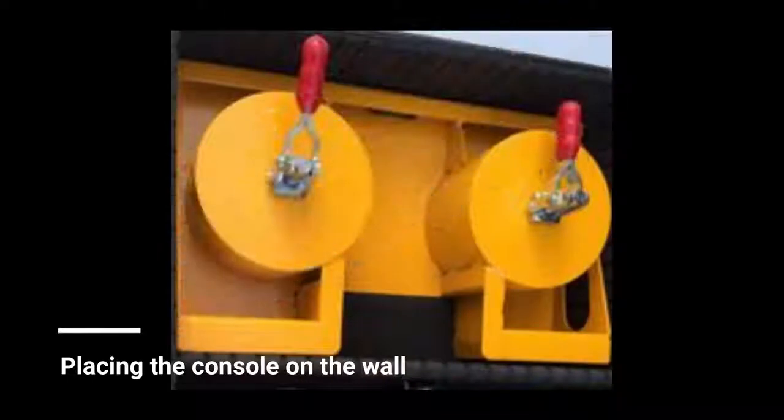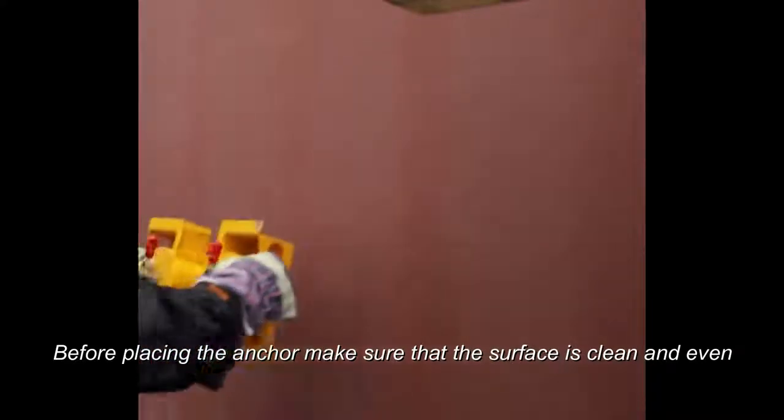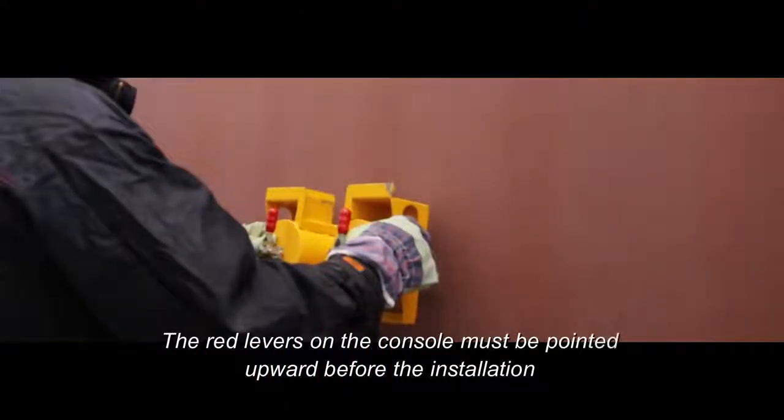Placing the console on the wall. Before placing the anchor, make sure that the surface is clean and even. The red levers on the console must be pointed upward before the installation.